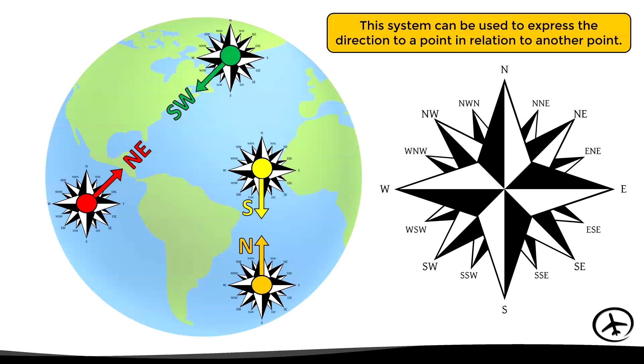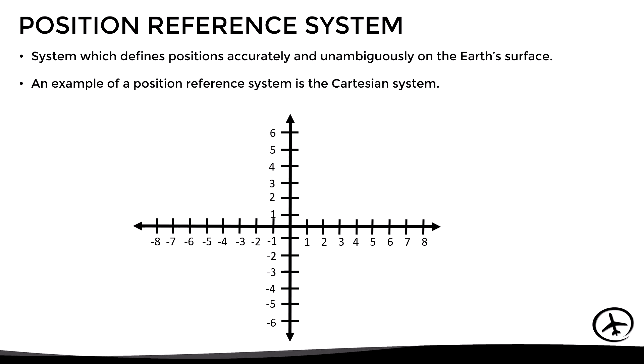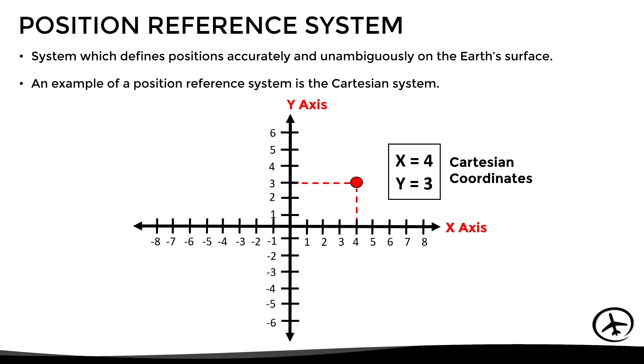The cardinal point system is used to express relative directions rather than exact positions on the earth. For that we need a position reference system where each position is precisely and unambiguously defined. An example is the Cartesian system, which uses two reference axes to express any position precisely by means of Cartesian coordinates. For example, a red point located at four units on the x-axis and three units on the y-axis would have coordinates x=4 and y=3.